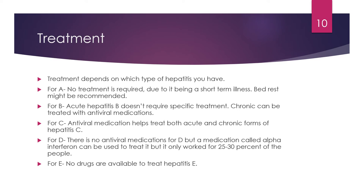For treatment, it all depends on what kind of hepatitis you have. For hepatitis A, bed rest might be recommended by your doctor as it is a short illness requiring no specific treatment. Acute hepatitis B also doesn't require specific treatment, but chronic hepatitis B can be treated with antiviral medications. For hepatitis C, antiviral medications help treat both acute and chronic forms. For hepatitis D, there are no antiviral medications, but a medication called alpha interferon can be used, though it has only shown to work for 25 to 30 percent of people treated with it.